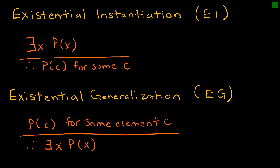Our next two rules are existential instantiation and existential generalization. The first one says: there exists some x such that P(x) — so there is some value that makes this true — therefore I can say that it's true for some specific value. That's really just the definition of existential. For existential generalization, it's just this backwards: if P(C) is true for some element C, then we can say there exists some element x such that P(x) is true.